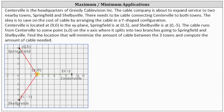Since we labeled the split point (X, 0), the horizontal distance from the origin is X units. This means the distance from Centerville to where the cable splits is 9 minus X. We need expressions for the distance from the split point to Shelbyville and to Springfield. Notice we have right triangles where one leg has a length of X.